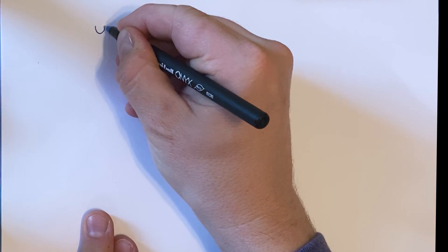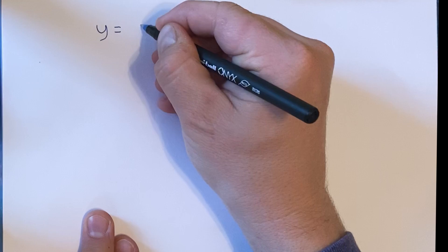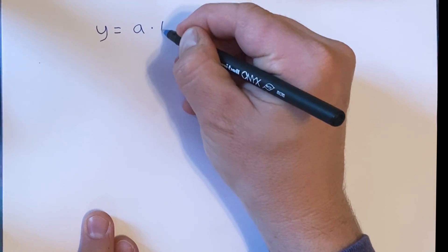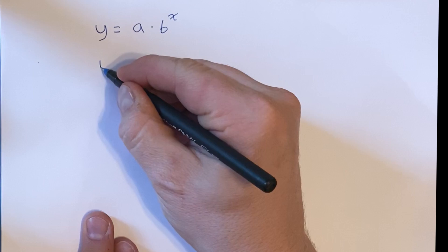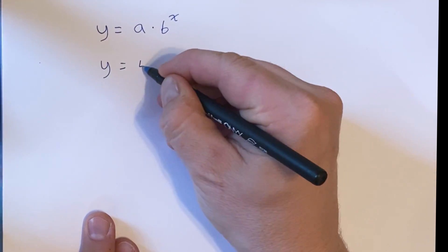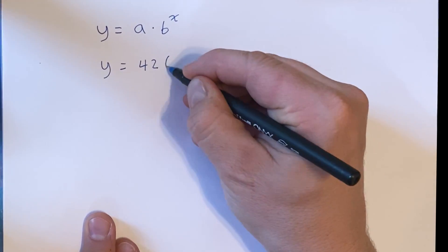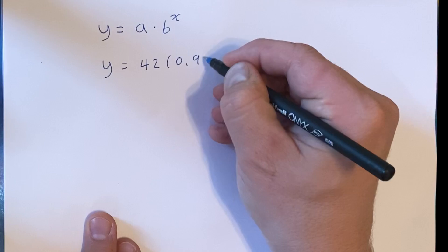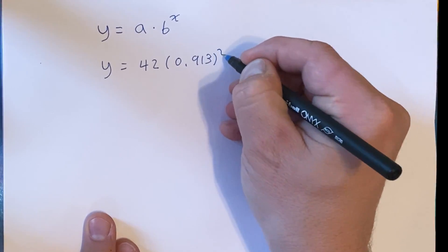We know what the form for exponential functions is. That's y equals a times b to the x power. And we are given y equals 42 times 0.913 to the x power.